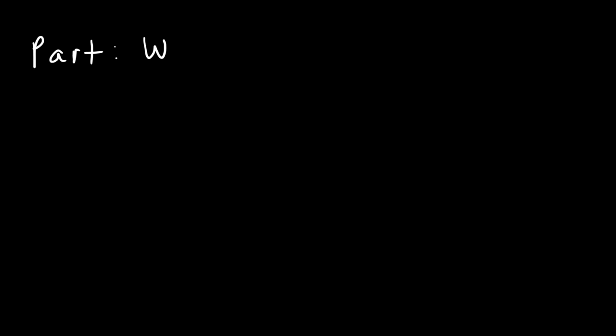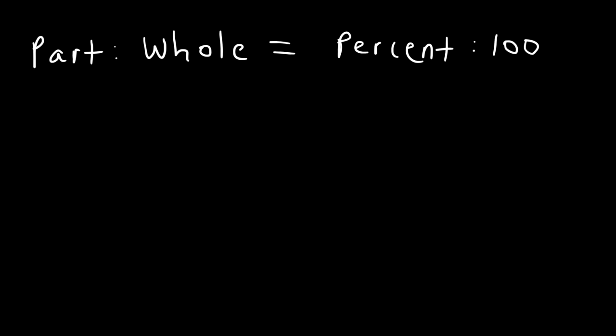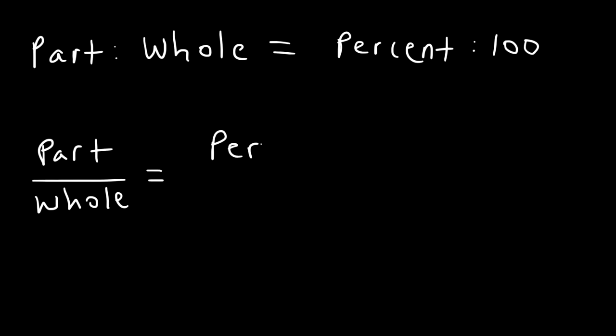In this lesson, we're going to talk about percent proportions. In a percent proportion, the ratio between the part and the whole is equivalent to the ratio between the percent and 100. So you can set it up as an equation or proportion. Here's the equation we're going to use: the part divided by the whole is equal to the percent divided by 100.